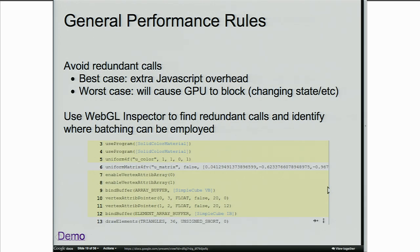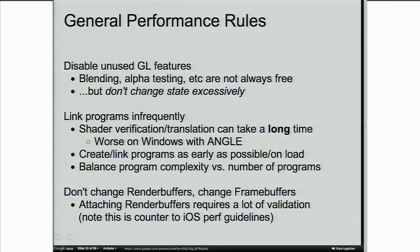Avoid redundant calls — in the best case they're just additional JavaScript overhead; in the worst case they're flushing all your state and losing cycles for no reason. Use WebGL Inspector to look for yellow calls and get rid of them. Note that in WebGL, state is consistent across frames — if you disable depth testing on one frame, you don't need to disable it the next frame. A lot of code unnecessarily sets a whole bunch of state at the beginning of each frame. Also, disable unused GL features: if you're not blending, don't blend.